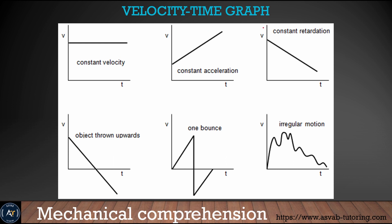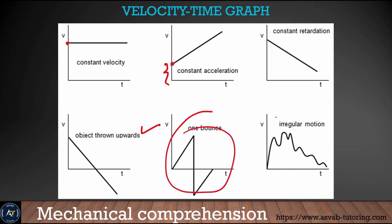The next thing we learn is the velocity-time graph. A lot of times students are asked in the test what graph is what, so make sure you know the distance-time graph and velocity-time graph. The first is constant velocity — it will be a straight line. Next is constant acceleration, where you start at a certain velocity and speed up. Next is constant retardation. Then there is an object thrown upward — its velocity-time looks like that. And if you throw a ping pong ball, after the first bounce the velocity-time looks like that. The last one is irregular motion — stopping and going.